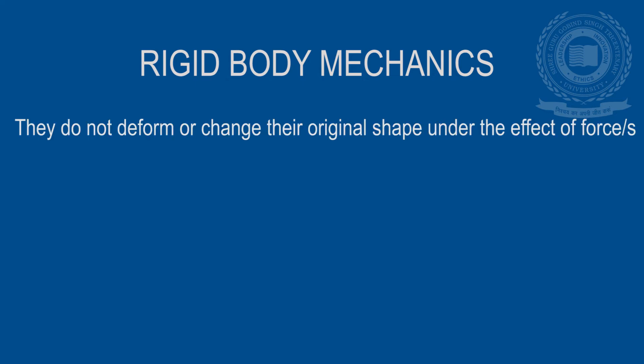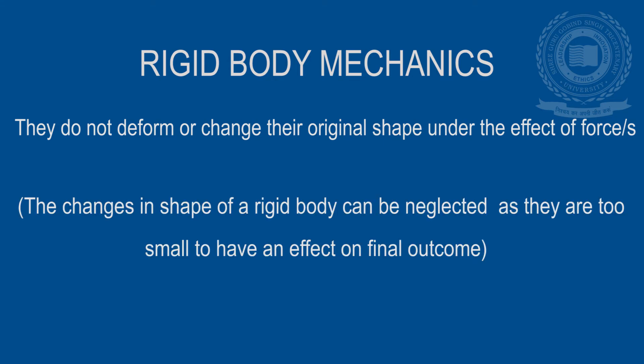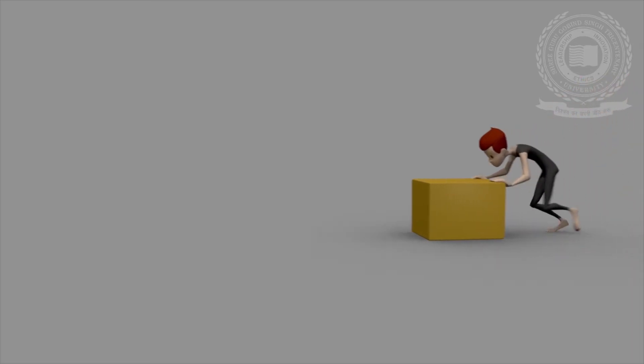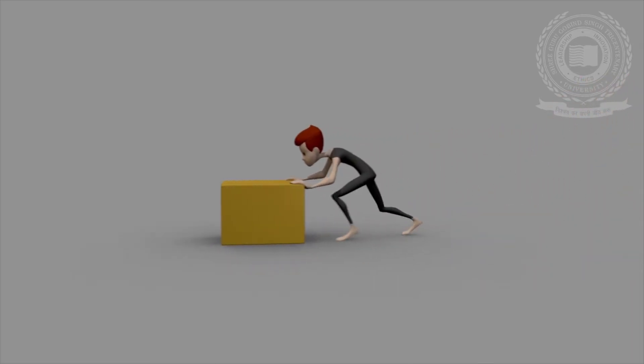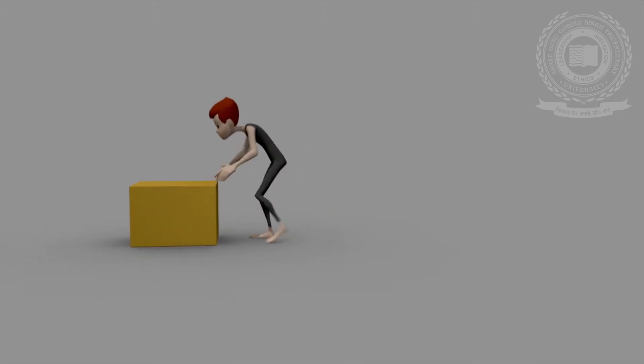In rigid body mechanics, we deal with objects that do not change or deform when acted upon by any number of forces. Strictly speaking, rigid bodies can also deform under the action of a force, but the change is so negligible that we can neglect it, as the end results will not be affected by this negligible change. For example, if a push force is applied on a block, it will slide, but there will be no change in its shape.